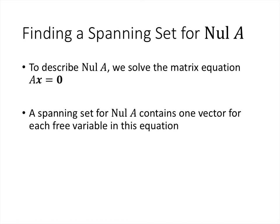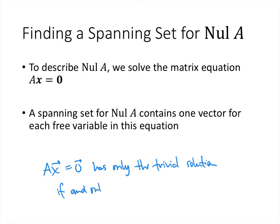To sum up, when we want a spanning set for the null space of A, we solve Ax = 0, and the spanning set contains one vector for each free variable. If there are no free variables — meaning A has a pivot in every column — then the only vector in the null space is the 0 vector, and Ax = 0 has only the trivial solution.